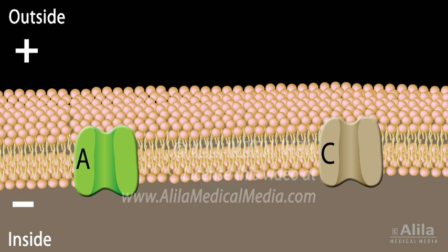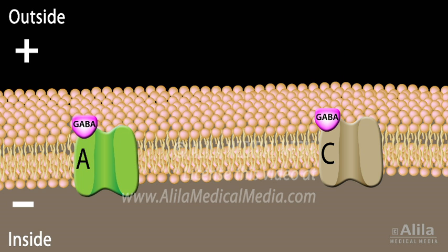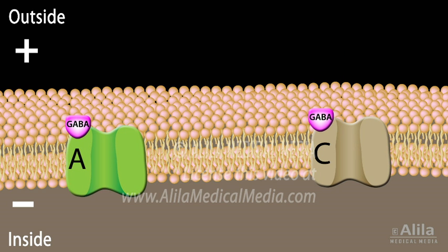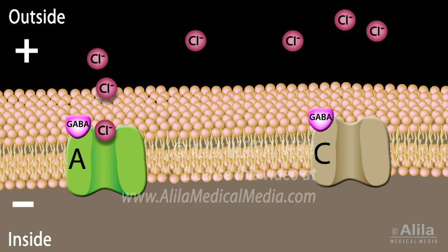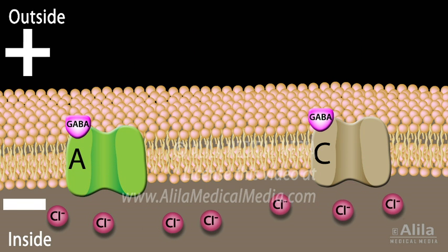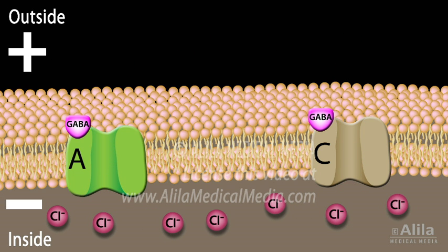GABA-A and GABA-C are ligand-gated chloride channels. Upon transmitter binding, they open and allow chloride ions to flow into the neuron, making it more negative or hyperpolarized and thus less likely to generate action potentials.